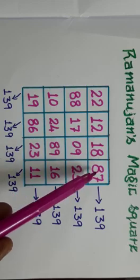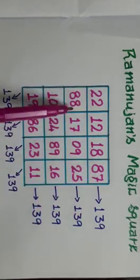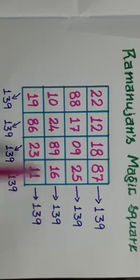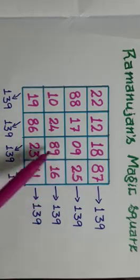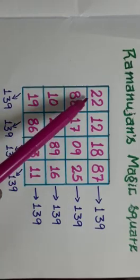Each row, when we sum up, we will be getting 139. Each column also, when we add up, you will be getting 139.